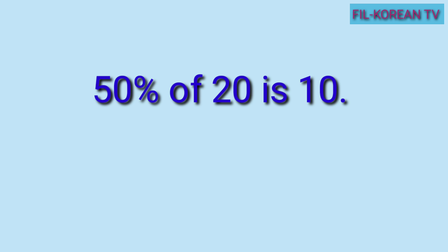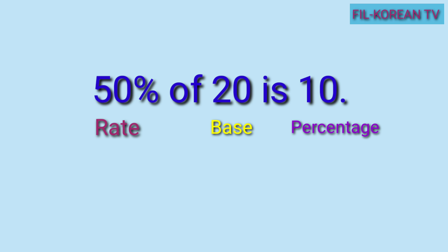Ngayon, i-identify natin ang bawat term or element sa sentence na ito: 50% of 20 is 10. Tandaan ninyo na ang number na may percent sign, ang tawag dyan ay rate. Kaya ang 50% ang tawag ay rate. Ang number naman na susunod sa 'of', ang tawag ay base — ito ang kabuoang dami o bilang. Ang 10, ito ang percentage. Ito ay parte lamang ng base, kaya mas mababa siya sa base.